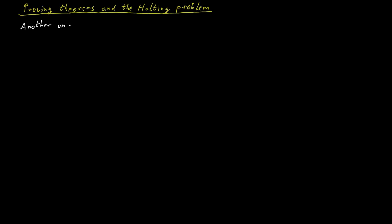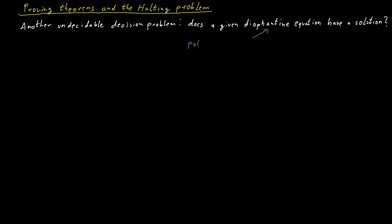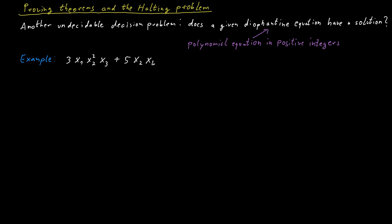Another example of an undecidable decision problem is the question of whether a Diophantine equation has a solution or not. A Diophantine equation is a polynomial equation in multiple variables, but the variables can only take positive integer values. For example, we could ask whether there are positive integer values for x1, x2, x3, x4, and x5 such that the equation 3·x1·x2²·x3 + 5·x2·x4·x5 equals 8 is satisfied.